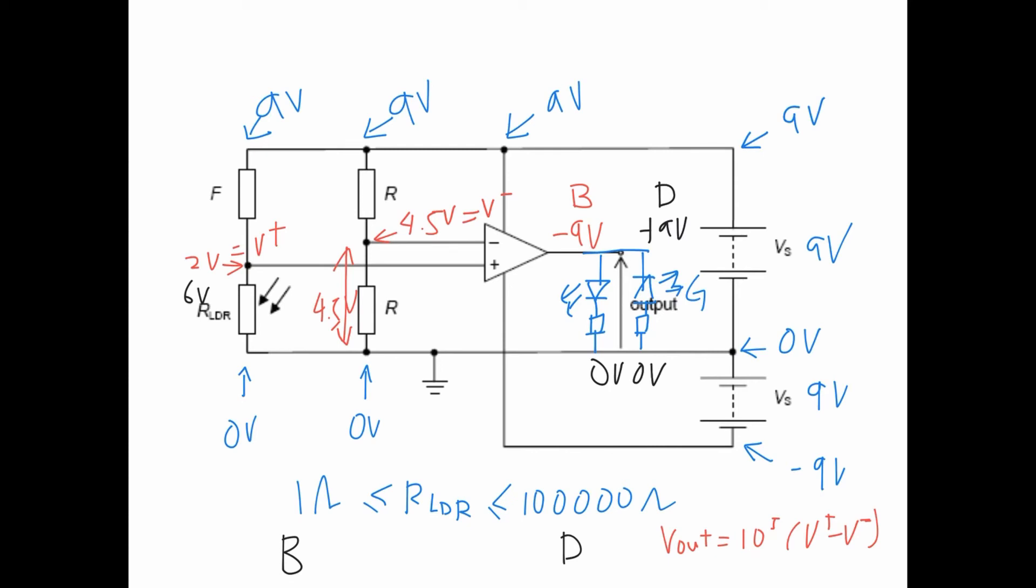But when it's dark, your output is positive 9. So if this is positive 9, this is 0. Current will flow this way through this LED. This LED cannot flow. So it will flow through this LED. So when it's dark, this one lights up. Therefore, this is red.